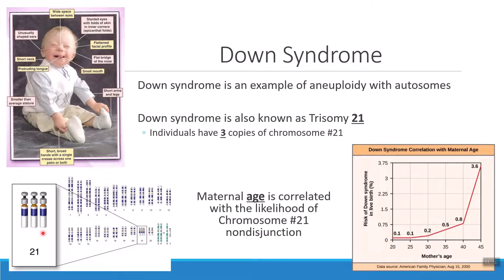Interestingly, the rate of Down syndrome — the likelihood of this particular aneuploidy developing — is very strongly linked to the age of a mother. As a mother ages, non-disjunction of the 21st chromosome becomes more likely. Notice very early in a female's reproductive years the chances are much lower, but as we go between the ages of 40 and 45, that risk skyrockets. The process of meiosis is a little less likely to be accurate as a mother ages. So Down syndrome is an example of non-disjunction that affected the autosomes — aneuploidy, the wrong number of chromosomes, in particular those autosomes.